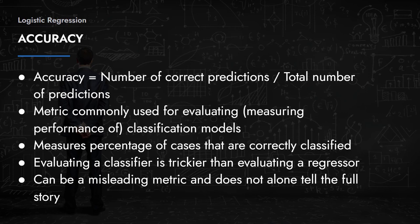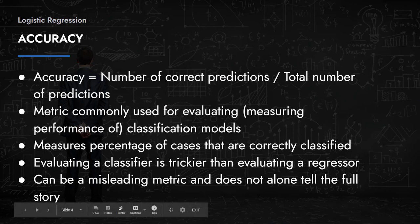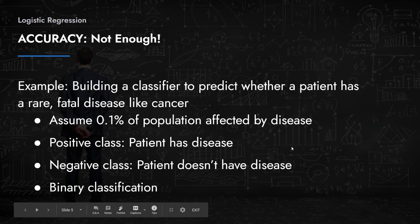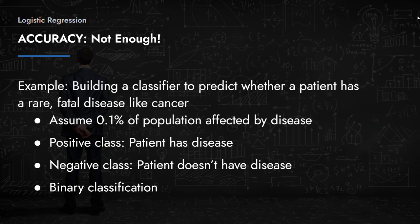Classifiers are more difficult to evaluate than regression models, so we need to define a few more performance measurements. Accuracy can be a misleading metric — it does not alone tell the full story. You might wonder how a model can have high accuracy but not be a good classifier; the next example explains exactly that.